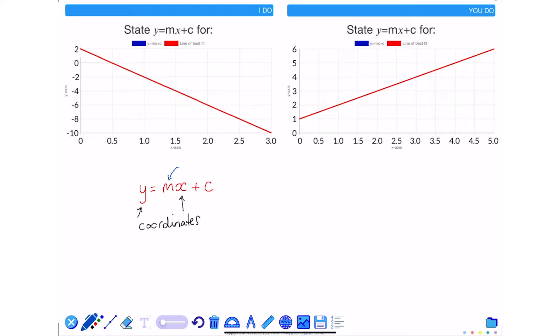M is the gradient, another word for the gradient is the slope of the line, and then we have c which is our y-intercept value.